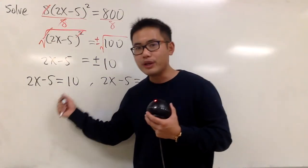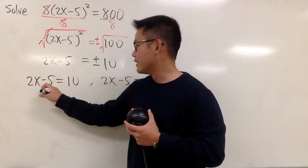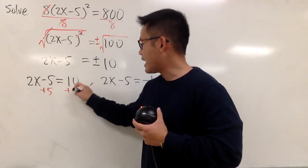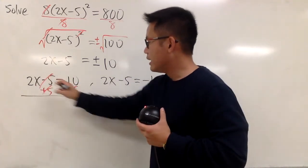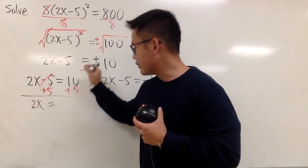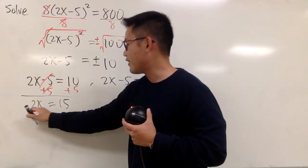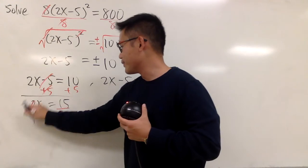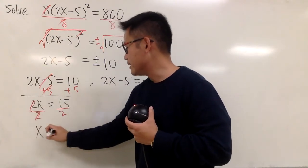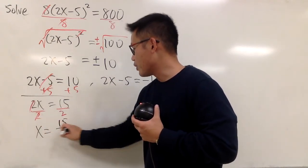And this is just a regular equation we can work out. So let's continue. We just add 5, cancel this out. This is 2x equals to 15, and then divide both sides by 2. We get the first answer: x is equal to 15 over 2.